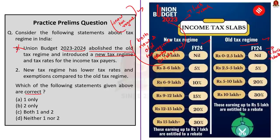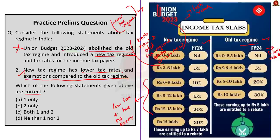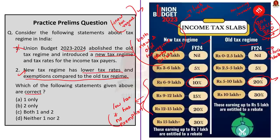Statement 2 says the new tax regime has lower tax rates and fewer exemptions compared to the old tax regime. This statement is correct. The new tax regime has lower tax rates — for example, the 6 to 9 lakh slab is taxed at 10% in the new regime versus 20% in the old regime. Additionally, the new tax regime has fewer exemptions: the old regime allows exemptions under Sections 80C, 80CCC, and 80D of the Income Tax Act, but no such exemptions can be claimed under the new tax regime. Since statement 1 is incorrect and statement 2 is correct, the answer is option B, two only.